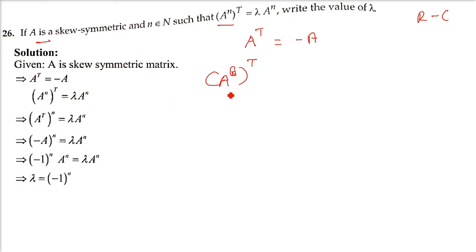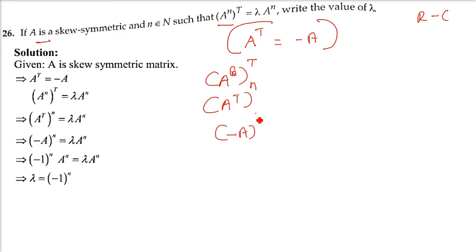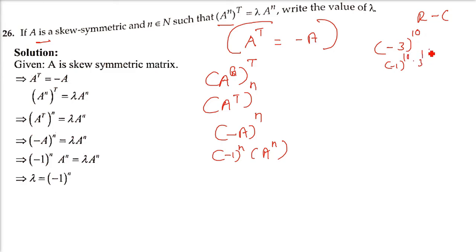So (Aⁿ)ᵀ = (Aᵀ)ⁿ = (-A)ⁿ = (-1)ⁿ · Aⁿ. This equals λ·Aⁿ from the given equation, and Aⁿ cancels on both sides, giving λ = (-1)ⁿ.